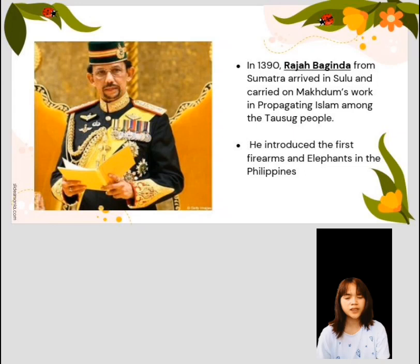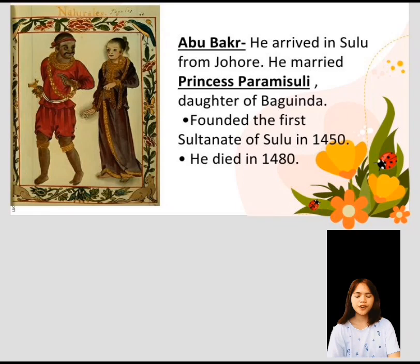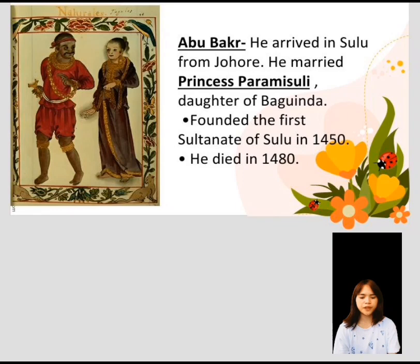Abu Bakr arrived in Sulu from Johor and married Princess Paramisoli, the daughter of Raja Baginda. Abu Bakr founded the first Sultanate of Sulu in 1450 and died in 1480. He and Princess Paramisoli became the first Sultan and Sultana.